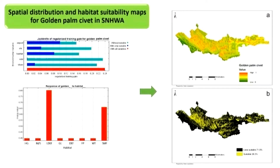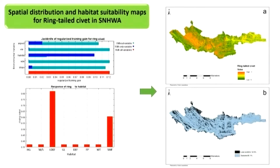This shows the brown mongoose and the stripe-necked mongoose. The golden palm civet in Sinharaja, unlike the other two areas, was distributed throughout due to the heavy vegetation. However, the lower dense forest area was still important for the golden palm civet, possibly due to the presence of more fruiting species in this region. This is the distribution map for the ring-tailed civet.